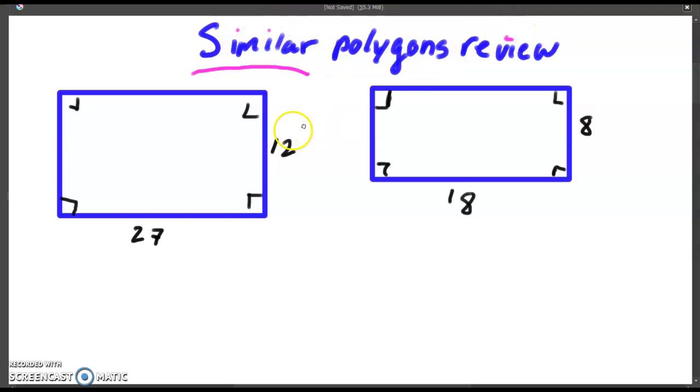So when we're talking about similar polygons, what we're looking for is two shapes that are exactly the same when it comes to angles. You can see these two shapes up here, we have 90 degree angles on all sides. These would actually be rectangles. And we need the sides to be directly in proportion to each other.